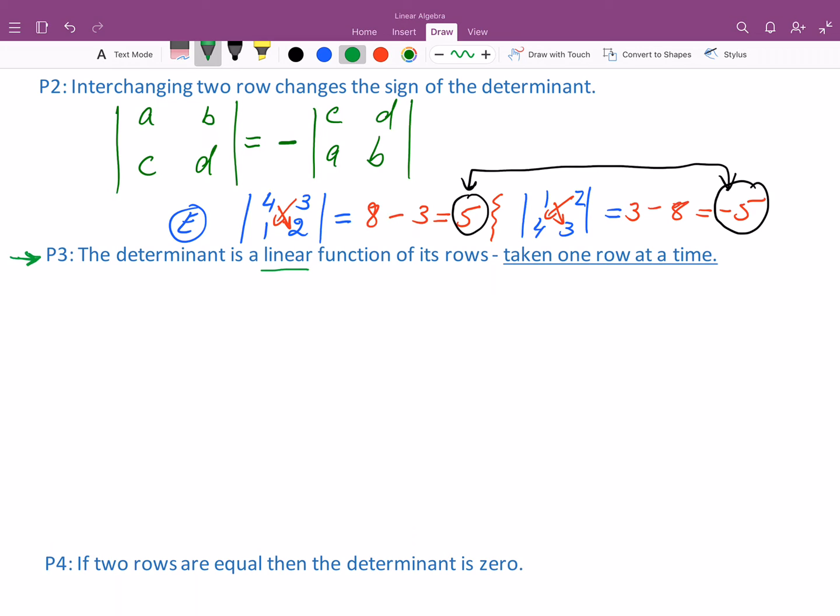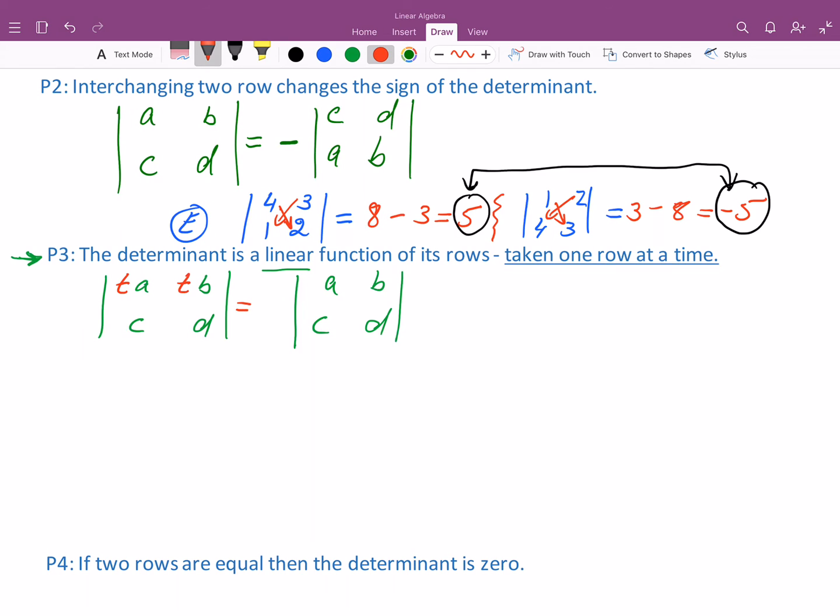So for example, if I have the determinant of A, B, C, D, now if I multiply this first row by T, what this property is saying is that I can just take the determinant of A, B, C, D and multiply the answer by T. So I can kind of factor out this constant, this multiplier from one row at a time. Okay, so that's one of the pieces of linearity.